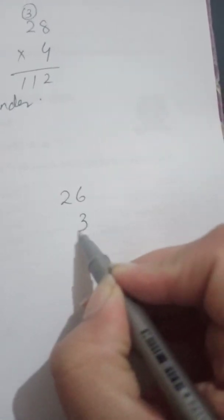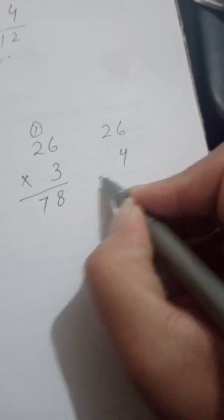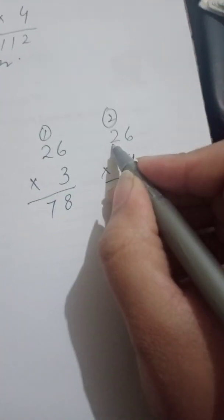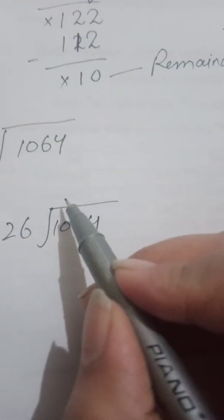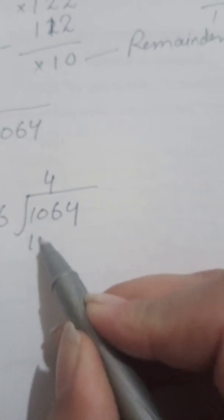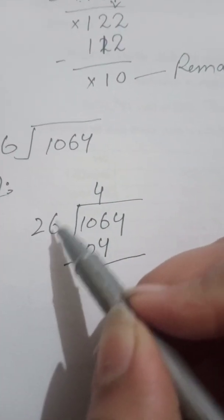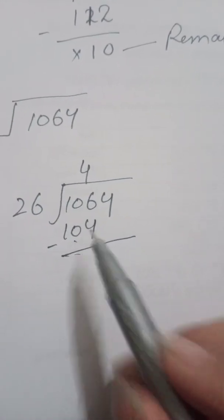Now we take 26 four times: 4 times 6 is 24, carry 2; 4 times 2 is 8, plus 2 is 10. So we get 104. This is the nearest smaller number to 106. We write 4 in the quotient and 104 as the product below.